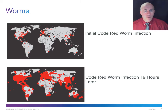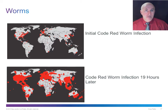This illustration shows how a worm propagates in 19 hours. The top image is hour zero; the bottom is 19 hours later, showing how the Code Red worm moved throughout the world in less than a day. They pick up momentum because it's exponential growth — one copy spreads to all systems around it, and those copies spread further.